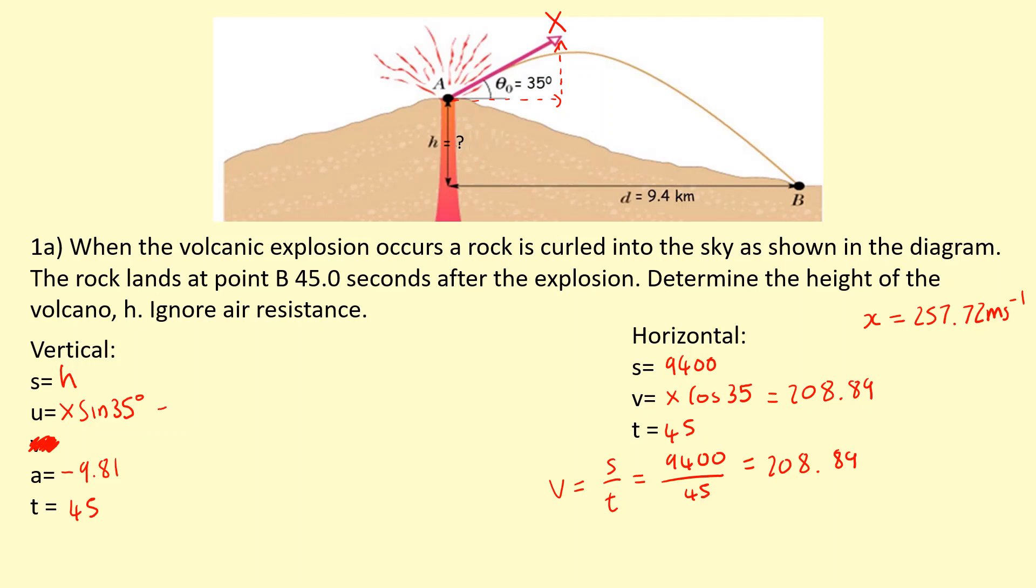Now we should be able to work out the initial vertical velocity by multiplying by sine 35. The initial vertical velocity will be 257.72 times sine 35, which equals 146.27 meters per second. It's fired upwards, so that's positive at 146.27 meters per second, and horizontally it's 208.89.